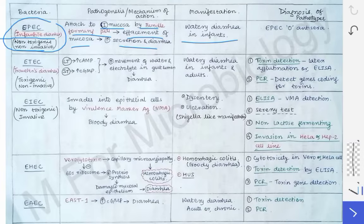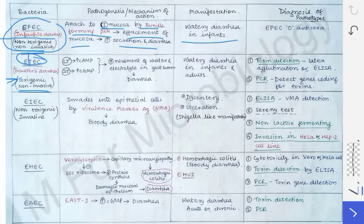Next is enterotoxigenic E. coli (ETEC), which is toxigenic — as the name suggests — but non-invasive. It causes traveler's diarrhea; remember 'T' stands for traveler. 'T' also means two — two toxins: heat-labile toxin and heat-stable toxin. Heat-labile toxin increases cAMP by activating adenylate cyclase, and heat-stable toxin increases cyclic GMP. A mnemonic: tilt 'S' slightly and it becomes 'G,' helping you remember that heat-stable toxin increases cGMP.